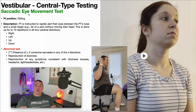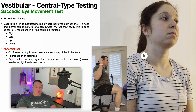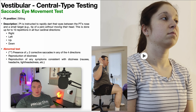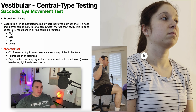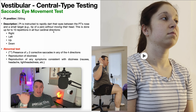To assess for normal saccadic eye movement, the patient is positioned sitting and instructed to rapidly dart their eyes between the PT's nose and a small target such as the tip of a pen. The key is without moving their head, so only the eyes are moving. This is done for up to 10 repetitions in all four cardinal directions: up, down, left, and right.